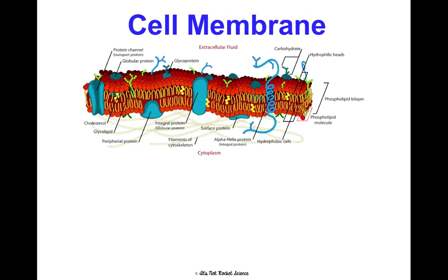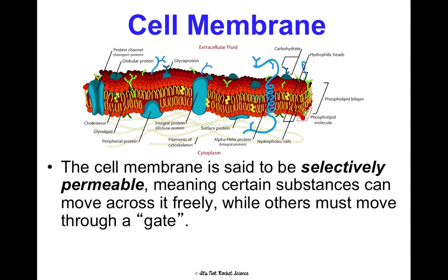Let's refresh ourselves about the cell membrane, which we talked about in concept one and in unit one. It is selectively permeable, meaning it's picky about what it lets go in and out. Only certain things can move across it freely, and other things have to go through a gate — these little protein channels — and some things can't get through at all.